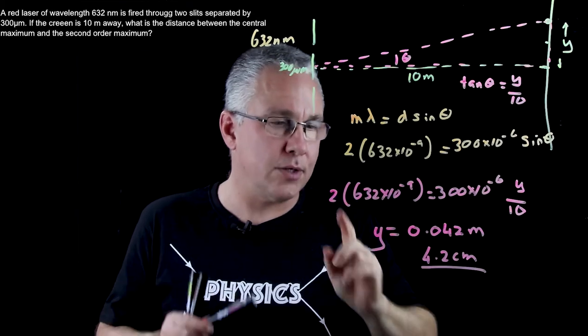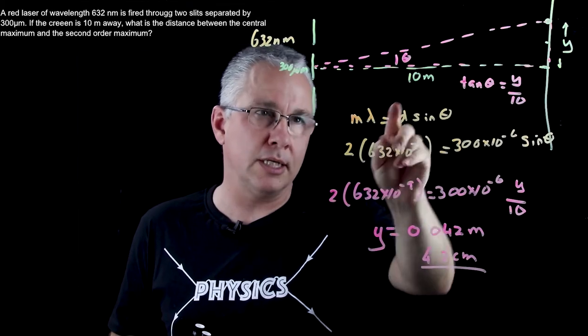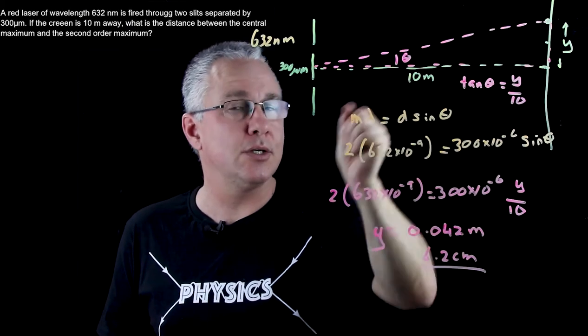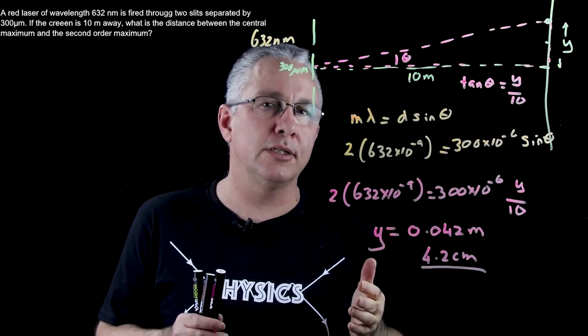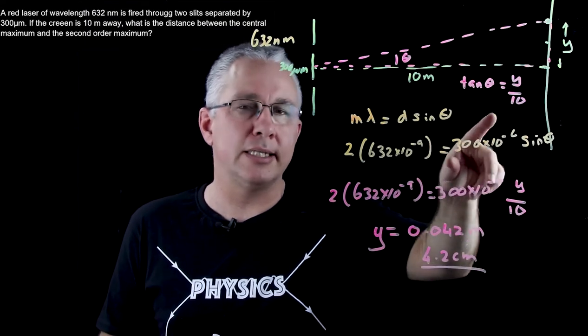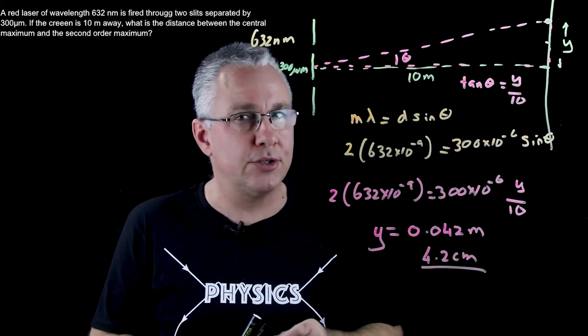Now again note this value is really small compared to this. If this angle becomes significantly larger because the screen is a lot closer, then you're going to not have this relationship as accurate because the sine theta and tan theta start to deviate from each other.